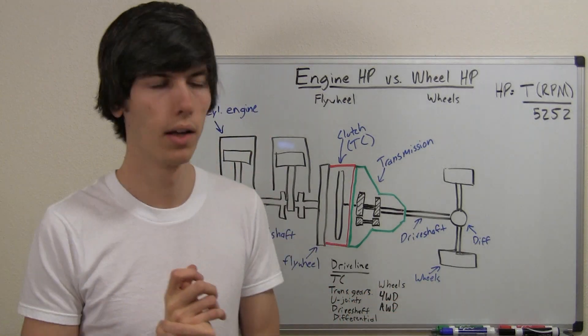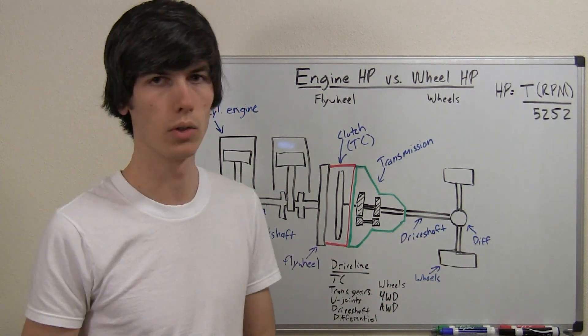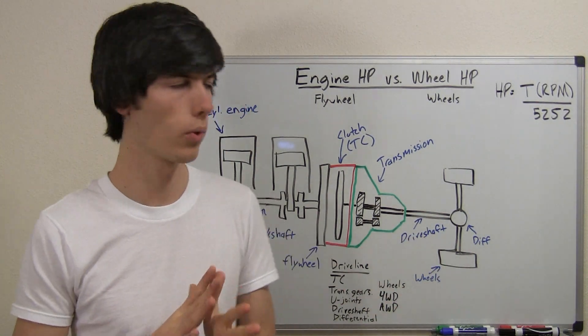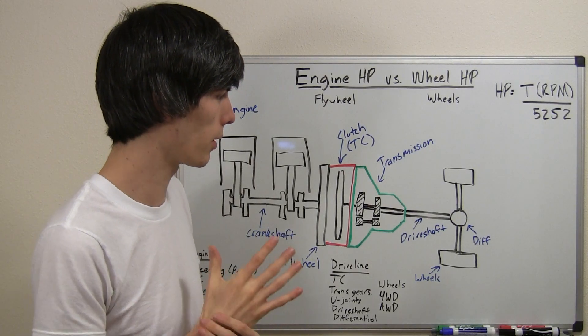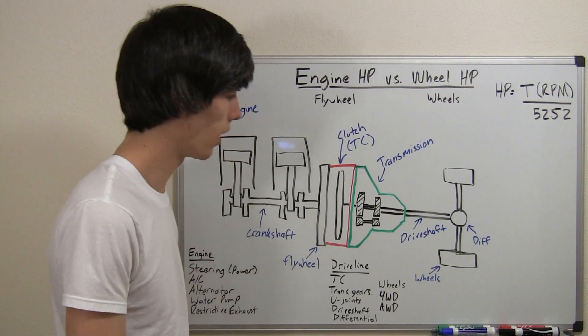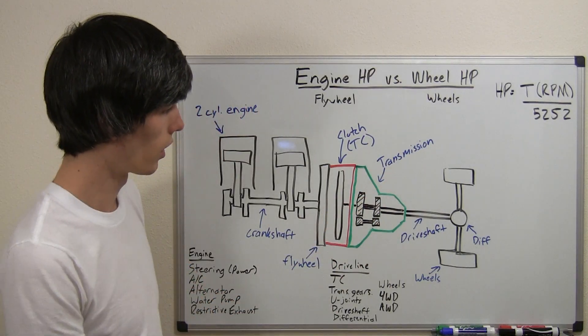As a general rule of thumb, a two-wheel drive vehicle is typically going to lose somewhere at about 10% to 15% of its engine power, probably around the 15% area, because of all the frictional losses throughout the drivetrain.